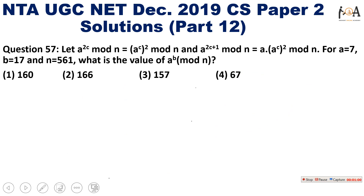The previous 55 questions have already been solved in the first 11 parts, with five questions in each part, and the links are given in the description section. You can go to the description section and watch the previous paper's questions. We have already solved June 2019, 2018, and December 2019 papers. For previous year's papers, you can also watch the solutions in our UGC NET playlist.